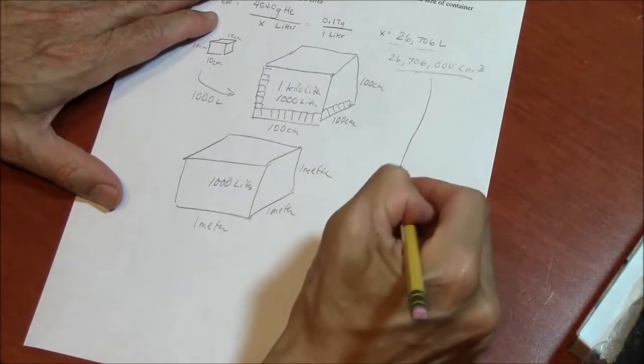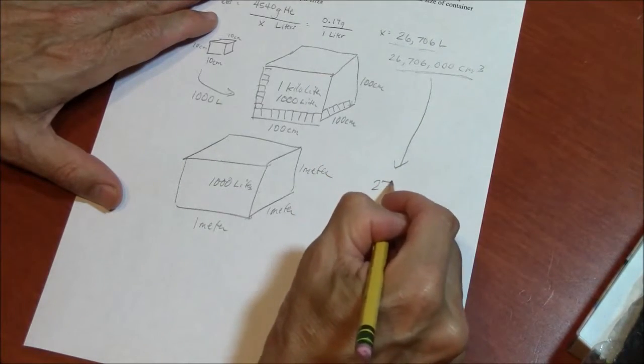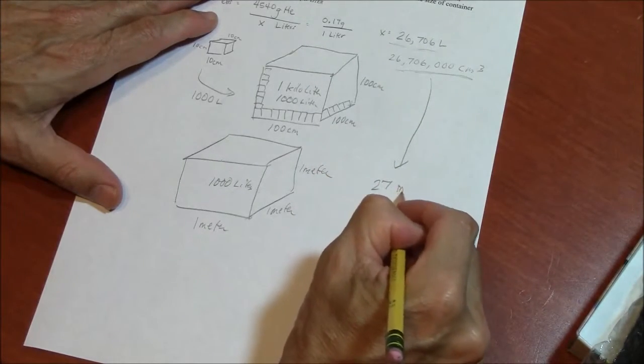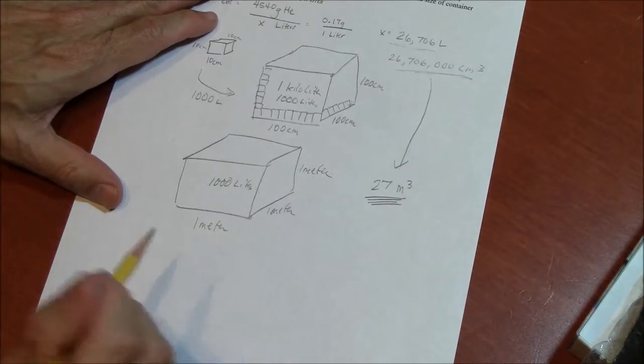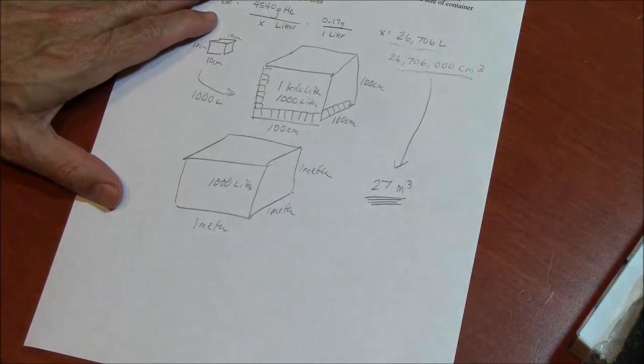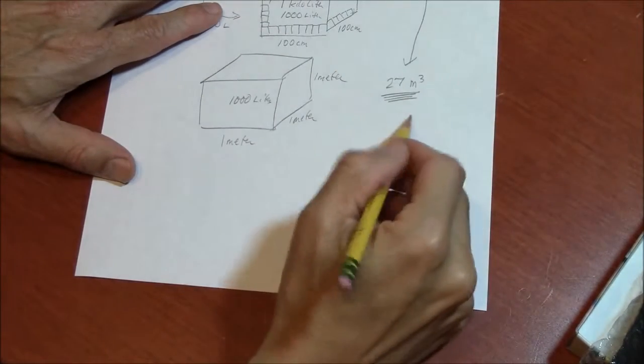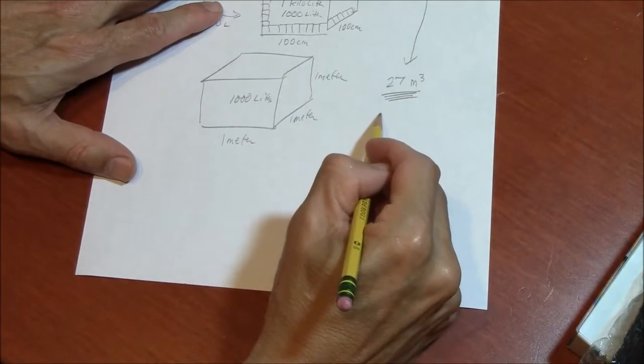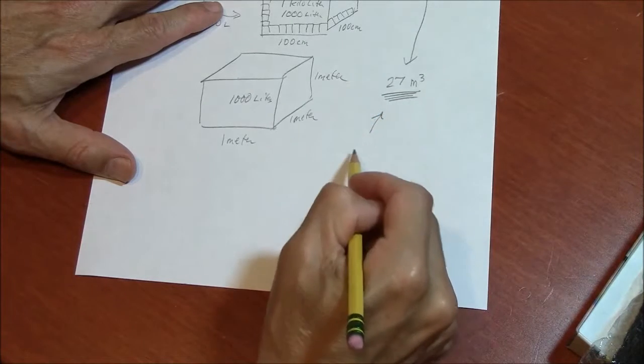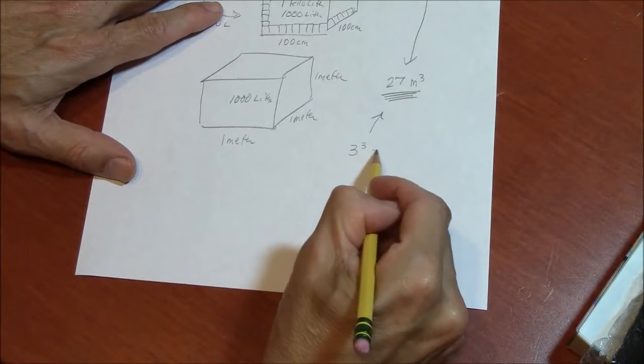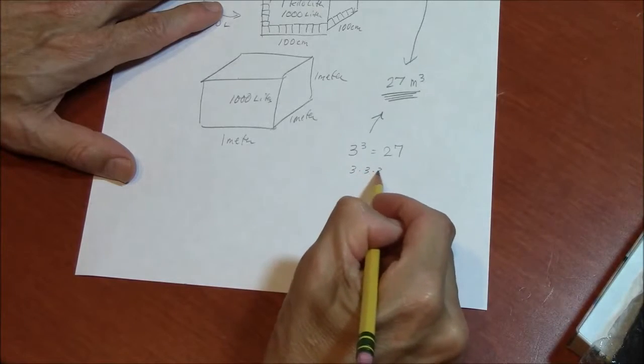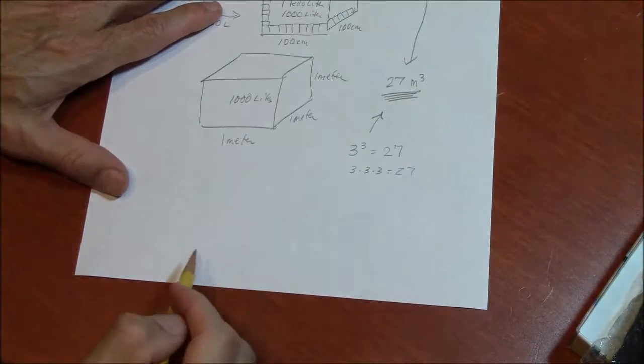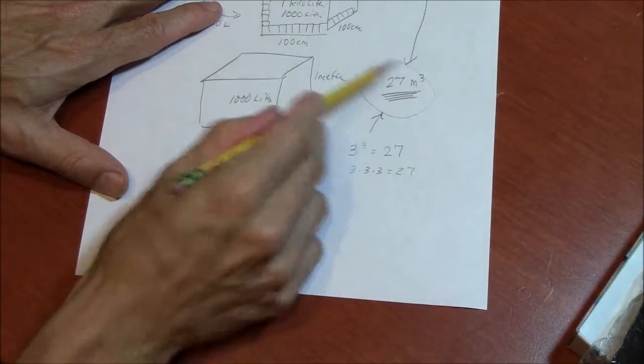So this value then becomes 27 cubic meters. Which we're getting close to now being able to visualize that. The number 27 happens to be a cube. 3 cubed equals 27. That's 3 times 3 times 3 is 27. So 27 cubic meters here.